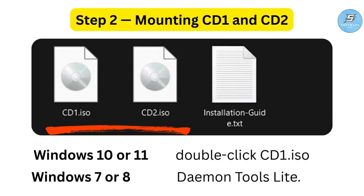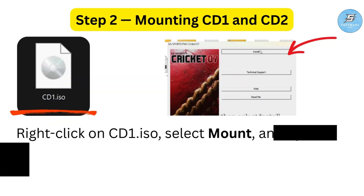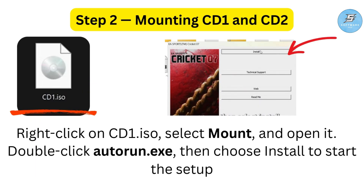If you are on Windows 10 or 11, simply double-click on CD1 and it will mount automatically. But if you are using Windows 7 or 8, you might need a tool like Daemon Tools Lite — you can download it from the link in the description. Once installed, right-click on CD1.iso, select 'Mount,' and open it. Now double-click autorun.exe, then choose 'Install' to start the setup.